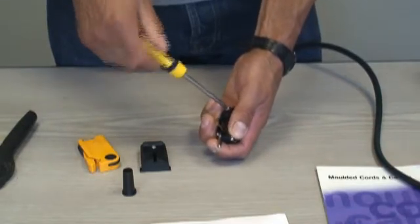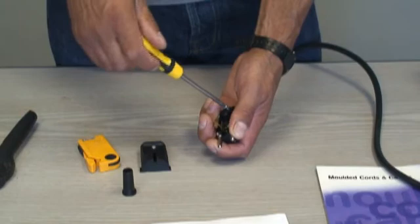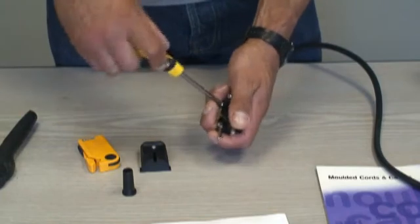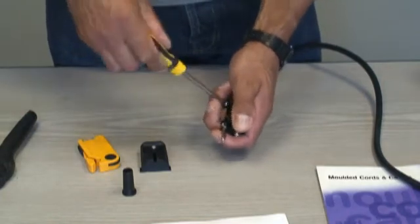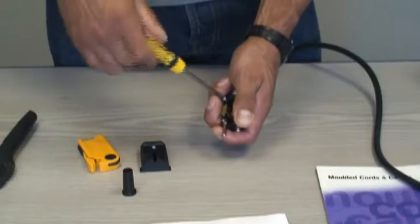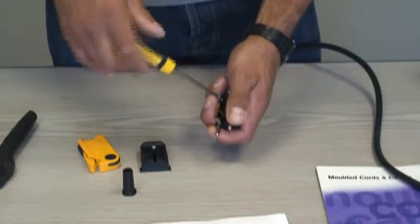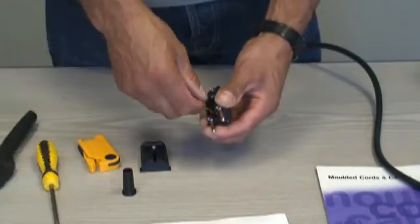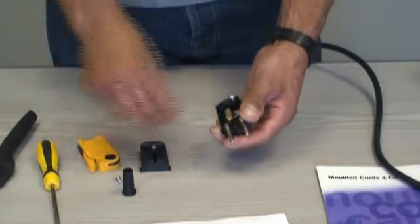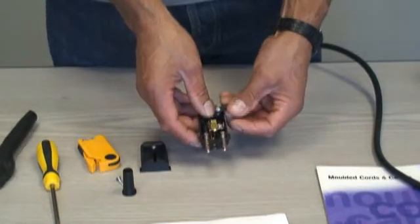Undo one of them nearly all the way, and then the next one undo all the way. Take that screw out, put that down to one side so that way you don't lose the strain relief.